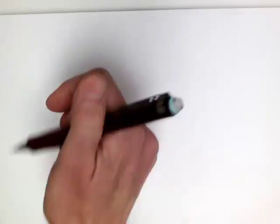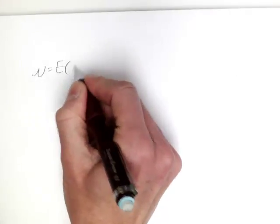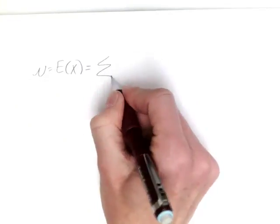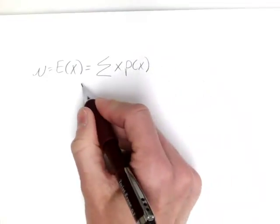Just as a reminder, to do this by hand, remember the mean is also equivalent to the expected value. What I'm going to do is sum all the x's times their corresponding probabilities.